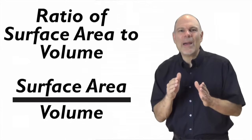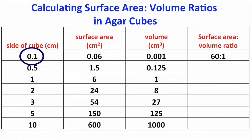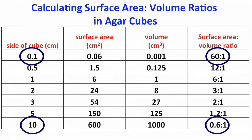So in our tiny imaginary cube, 0.1 centimeters on a side, the surface area to volume ratio is 60 to 1. In the largest cube that we're considering, 10 centimeters on a side, the ratio is a hundred times less, 0.6 to 1.